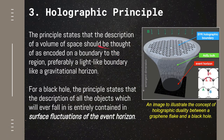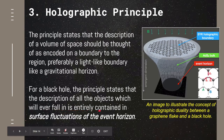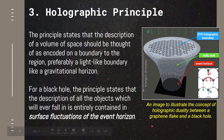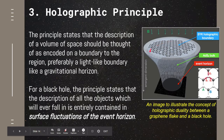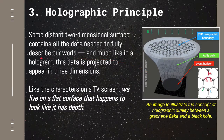The principle states that the description of a volume of space should be thought of as encoded on a boundary to the region, preferably a light-like boundary like a gravitational horizon. For a black hole, the principle states that the description of all objects falling in is entirely contained in the surface fluctuations of the event horizon. To be honest, this is quite a technical physics theory, and being a biology major, I might be a little bit limited in describing it. But as far as I understand, it says that everything we see in the universe is actually a projection from its source — some distant two-dimensional surface contains all the data needed to fully describe our world. That distant two-dimensional surface is projecting everything we see in our 3D world right now.